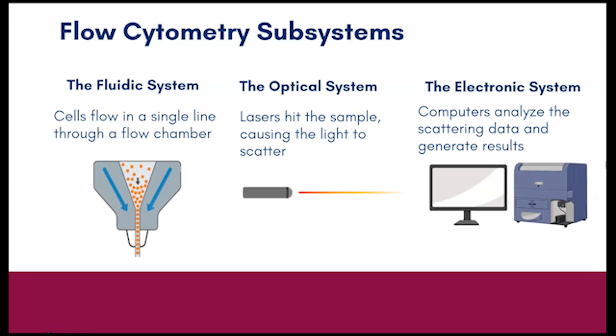Firstly, there's a fluidic system that allows for the flow of cells in a single file line through a flow chamber. Secondly, there's an optical detection system. Lasers are used to strike the sample at what is known as the interrogation point, which causes scattering of the laser light. Various mirrors and filters direct and guide the light towards detectors. Signals are then amplified and converted towards the final component, which involves the computer systems analyzing the data and generating the output results.